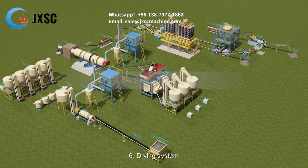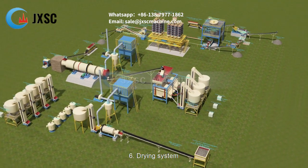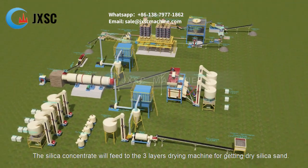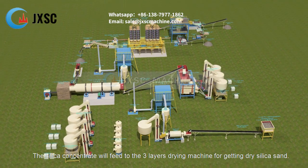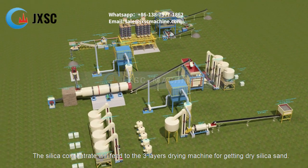6. Drying system. The silica concentrate will be fed to the three-layer drying machine for getting dry silica sand.